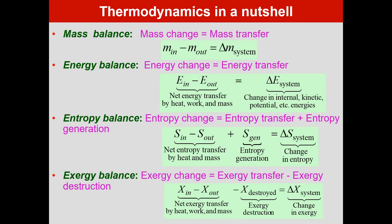First it starts with the mass balance of the system. If you want to find out the mass change in the system, first we need to calculate what is the mass input into the system and what is the mass output of the system. From there we can calculate the mass transfer in the system. Similarly, if you want to find out the energy balance, you need to find out what is the net energy input into the system and the energy which is leaving the system.